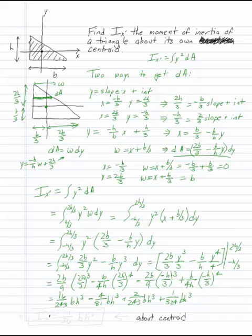All of which works out to the formula you should memorize for a triangle: Ix equals 1 over 36 bh cubed. That is the moment of inertia for a triangle about its own centroid. And when we come to doing any kind of composite body, this is the one you need to know.